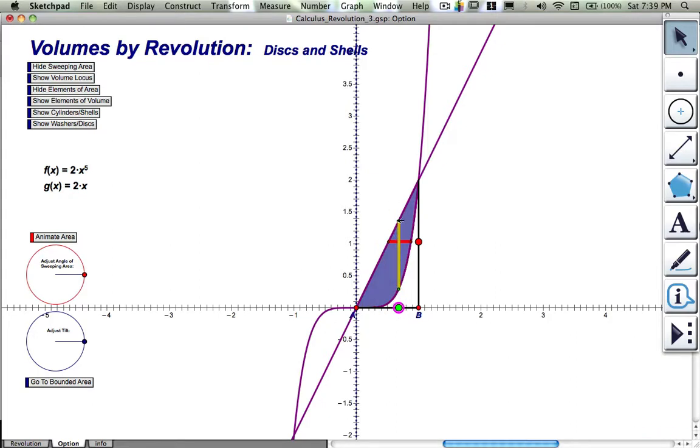Now to find the volume, as it turns out, it's possible if we can describe how much volume this piece of area is responsible for creating. And this piece of area, as it sweeps around, I'm going to watch it sweep around.